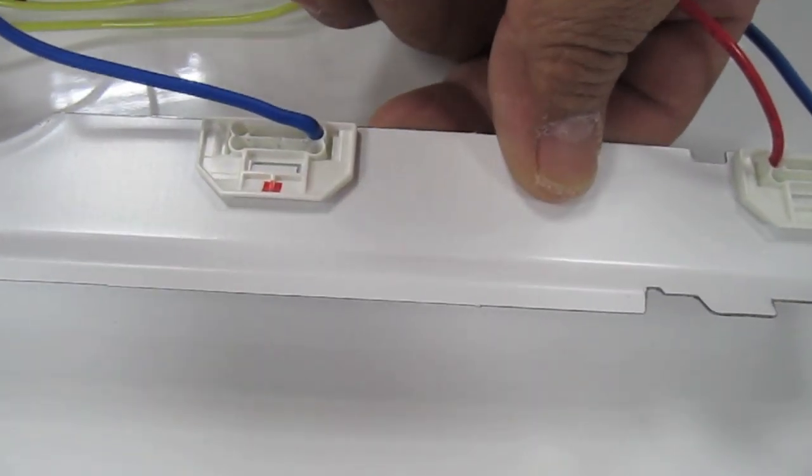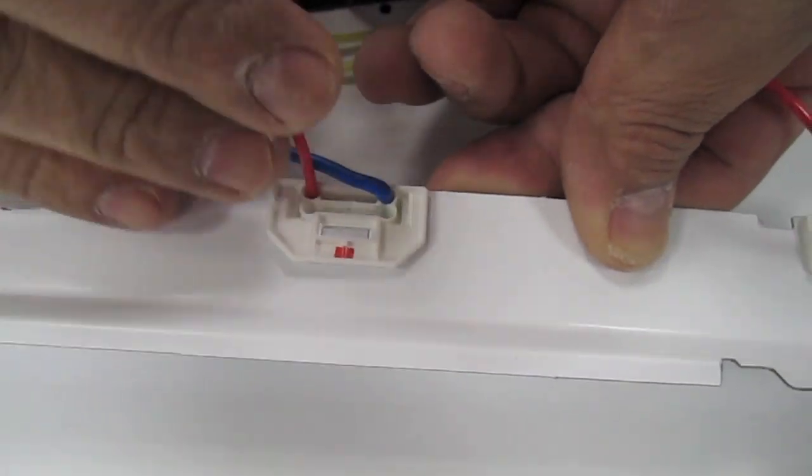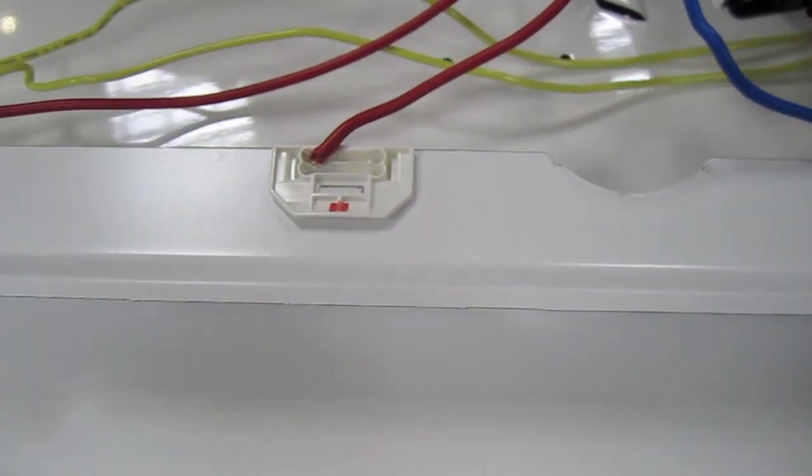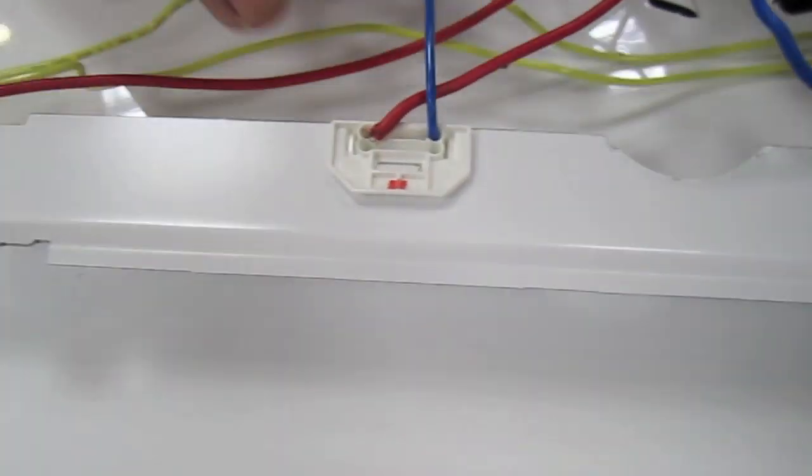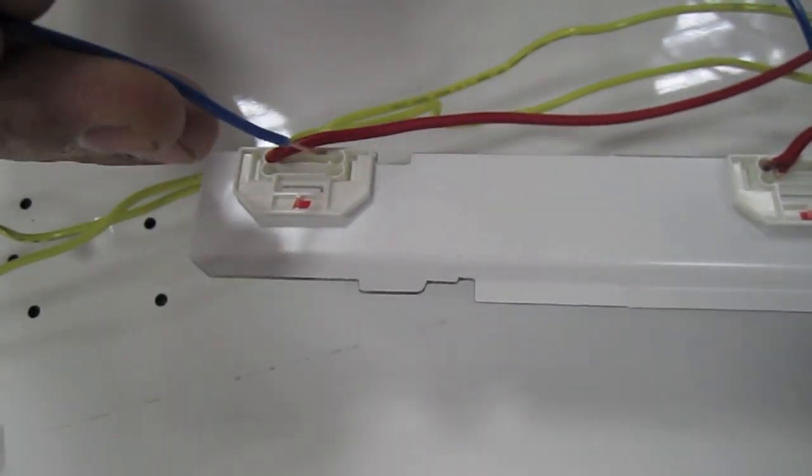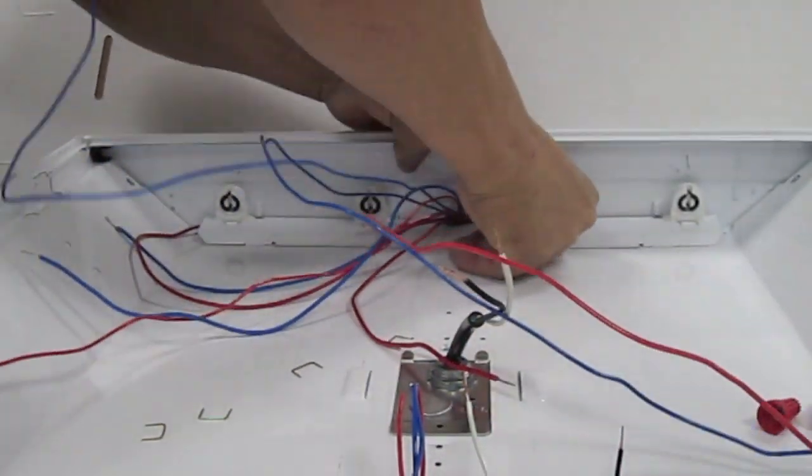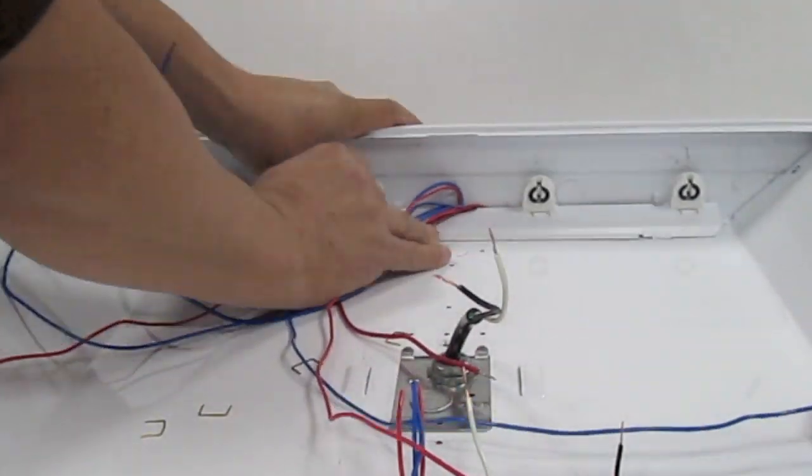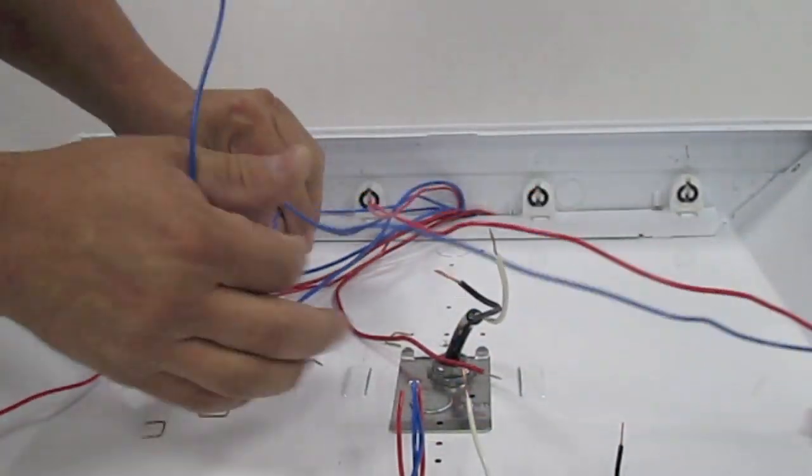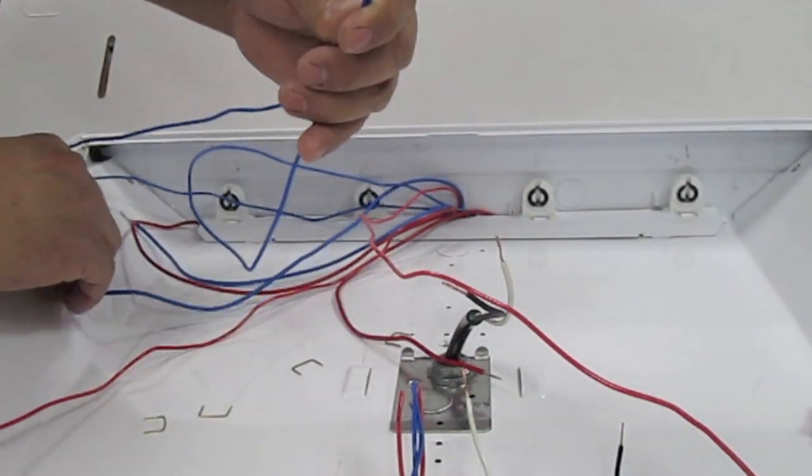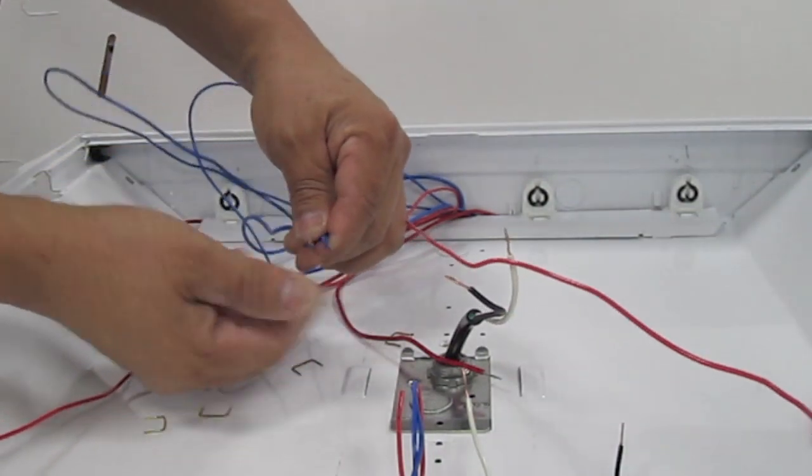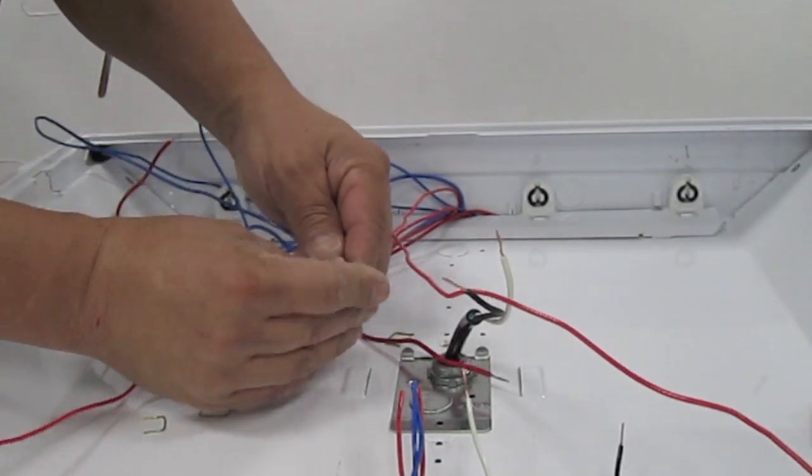Insert the new red and blue wires. Replace the lamp holder cover plate. Connect the blue wires to the white wire and connect the red wires to the black wire.